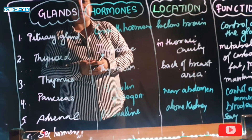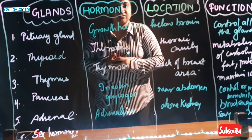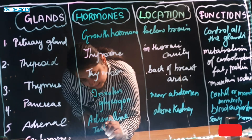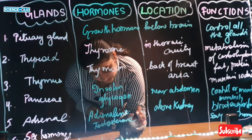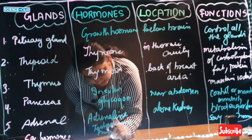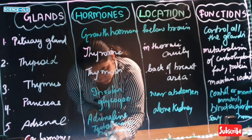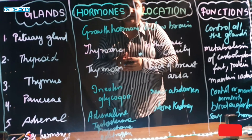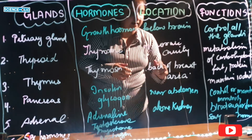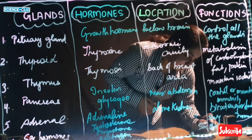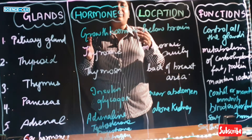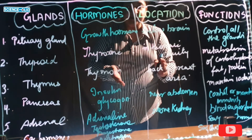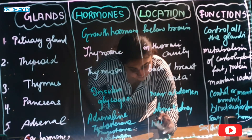Last are the gonads or sex hormones — estrogen, progesterone, and testosterone. These maintain the sex characters in human beings, such as the development of mammary glands and beard growth. The gonads are located near the pelvic region.